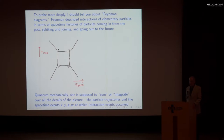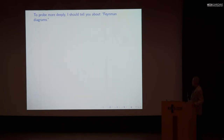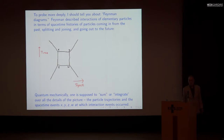I've drawn this picture as if the particles are classical particles on definite paths, because as always I can't draw quantum uncertainty. But quantum mechanically, you're supposed to sum or integrate over all the details of the picture — the particle trajectories, which become fuzzy as they always do in quantum mechanics. Crucially, you also integrate over the space-time events at which interaction events occur. An interaction event is a moment in space-time at which one particle splits into two, or two recombine into one.